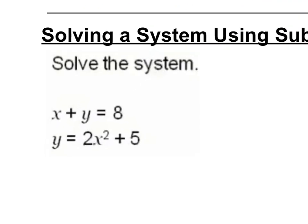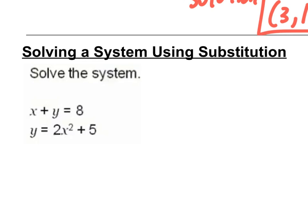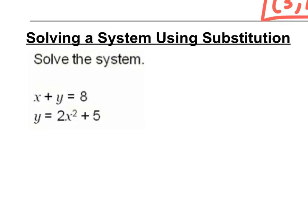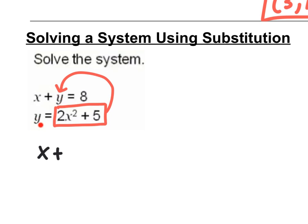Now let's solve another system algebraically using substitution. I'm looking for an isolated variable. I have y equals 2x squared plus 5, and I'm going to substitute that into y of the other equation x plus y equals 8. So I rewrite it as x plus 2x squared plus 5 equals 8.